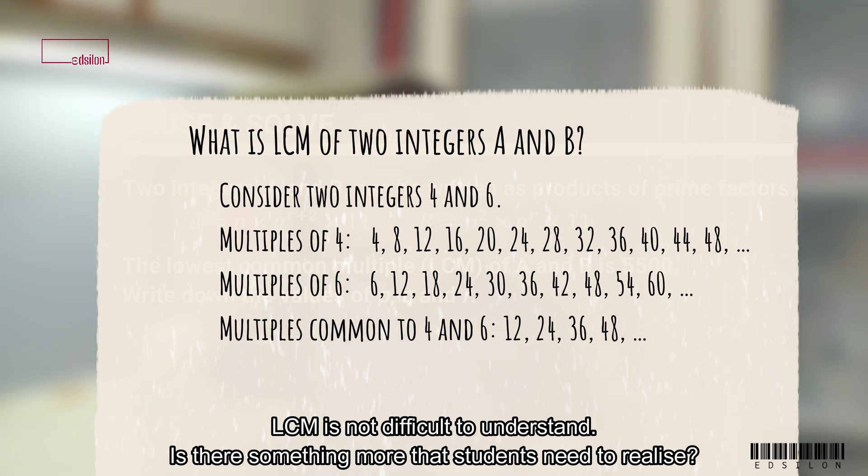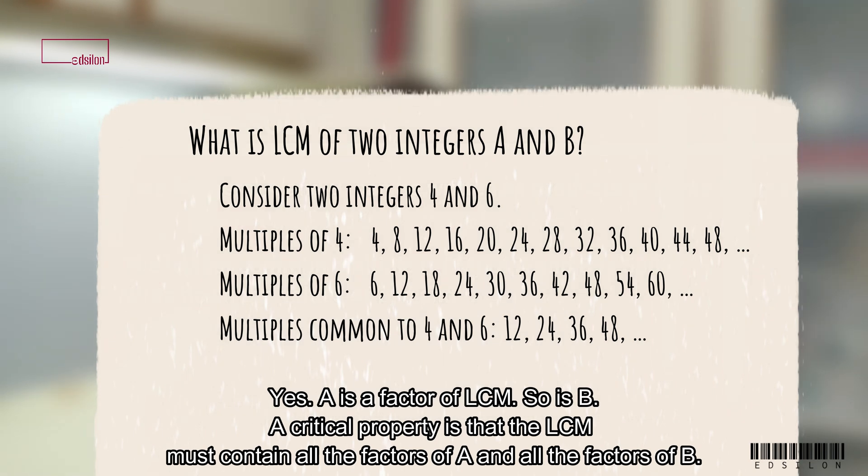LCM is not difficult to understand. Is there something more that students need to realize? Yes, A is a factor of LCM. So is B. A critical property is that the LCM must contain all the factors of A and all the factors of B.